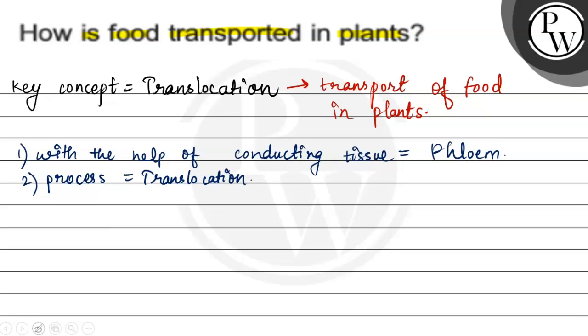This movement of food is against the concentration gradient, so it uses ATP. ATP consumption happens when translocation occurs, that's why it is an active process.